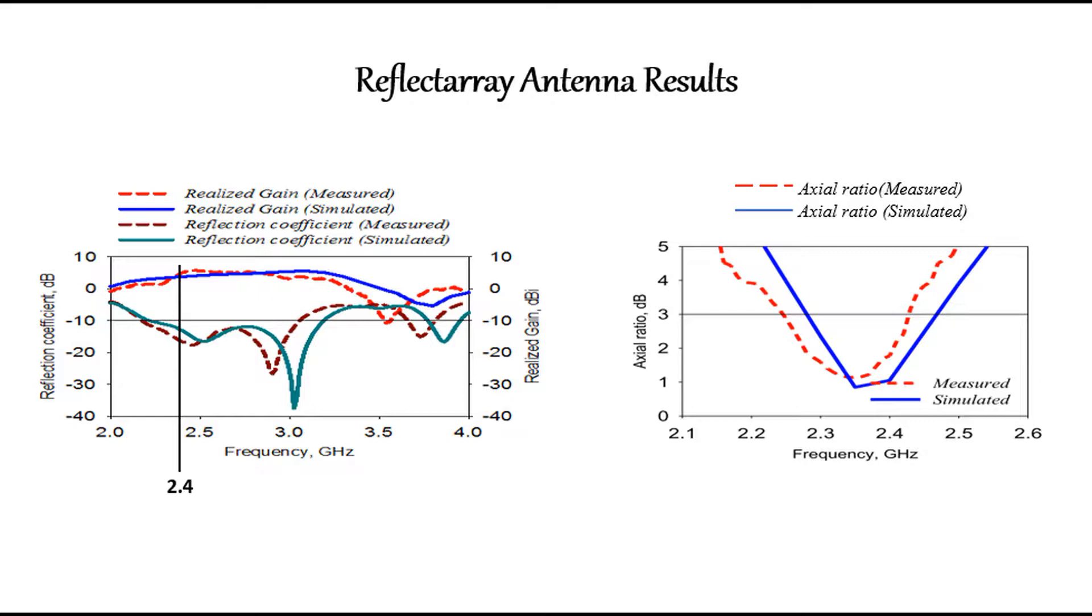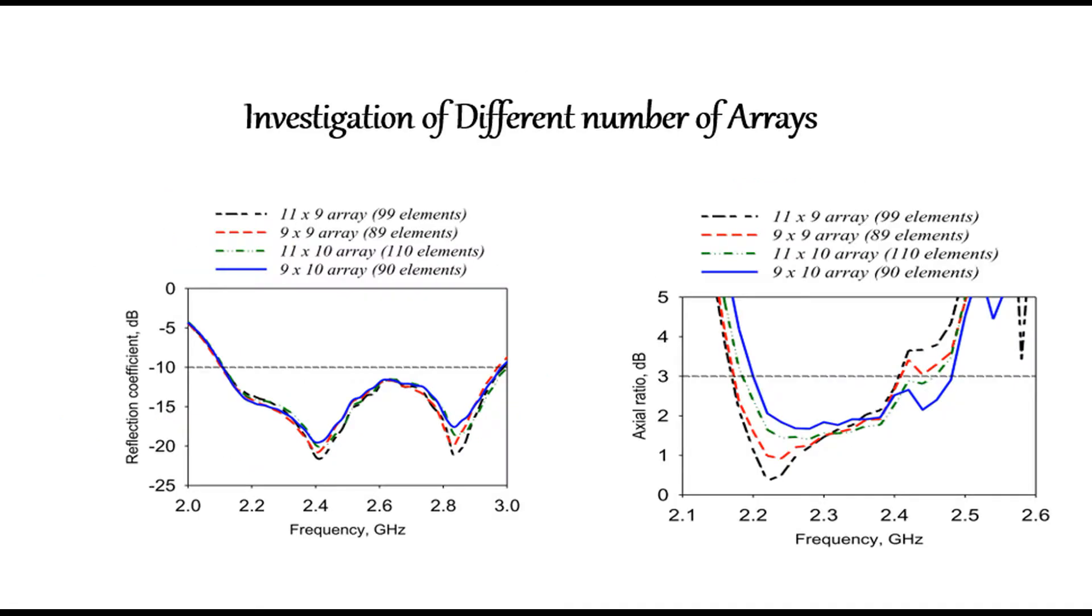While the graph on the right shows the measured axial ratio bandwidth of 7.5%. On the other hand, different numbers of array cells have been investigated, and a 9 by 10 array became the optimal choice due to the wide 2 dBi axial ratio bandwidth.